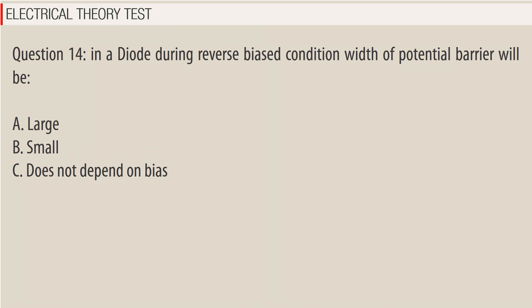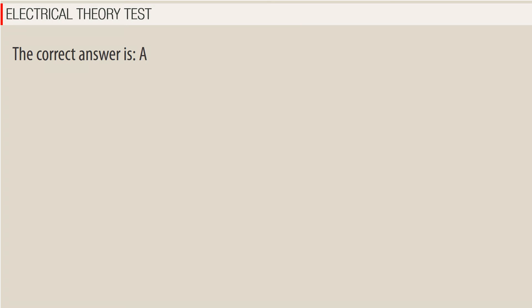Question 14. In a diode during reverse biased condition, the potential barrier will be: A. Large. B. Small. C. Does not depend on bias. The correct answer is A — Large.